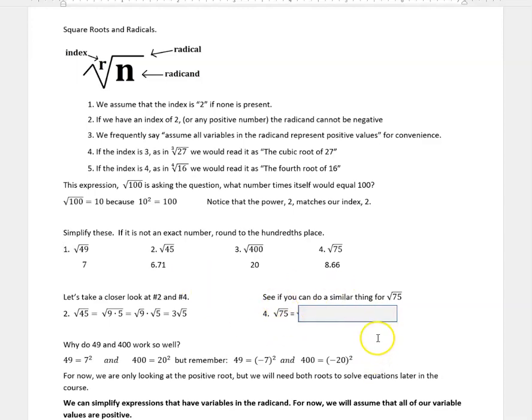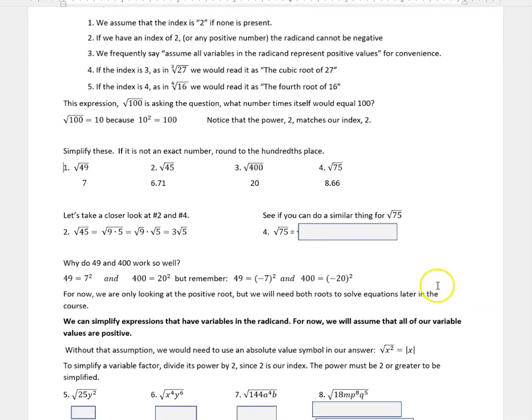See if you can do a similar thing for square root of 75. You can pause the video and try it. And what we want to do here is find a perfect square that goes into 75. Perfect square numbers are like 1 times 1 is 1, 2 times 2 is 4, 3 times 3 is 9, 4 times 4 is 16, and so forth. So the perfect square in 75 is 25, so we're looking at 25 times 3. If I separate that out, the square root of 25 is 5, so I get 5 square root of 3.